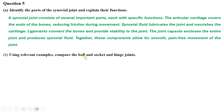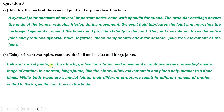Question five (b) — compare the ball and socket joint and hinge joint using relevant examples: ball and socket joints, such as the hip, allow for rotation and movement in multiple planes, providing a wide range of motion. In contrast, hinge joints, like the elbow, allow movement in one plane only, similar to a door hinge. While both types are synovial joints, their different structures result in different ranges of motion suited to their specific functions in the body.